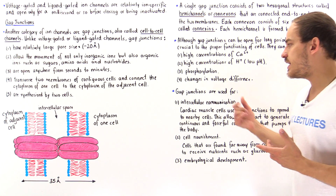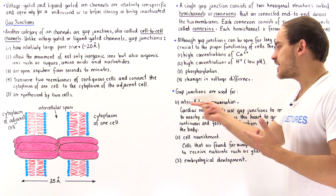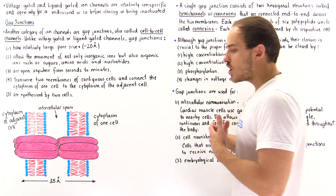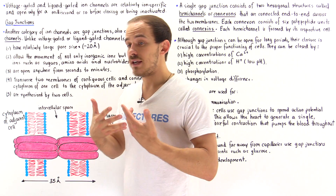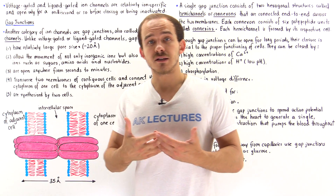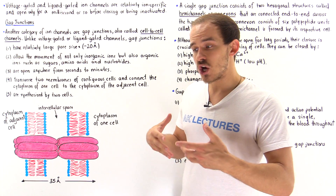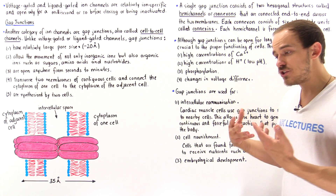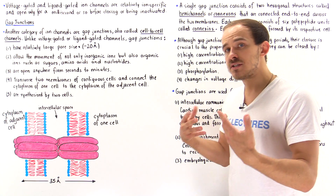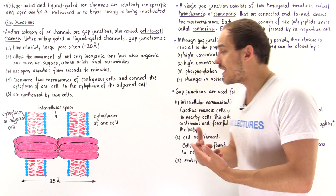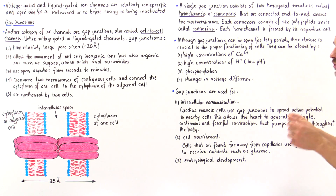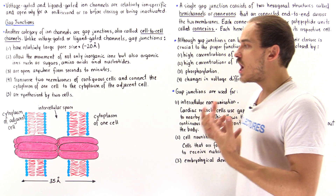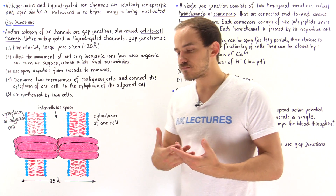Another example of intercellular communication via gap junctions is in the muscle cells of the uterus. When a woman is about to give birth, the uterus must contract, and it's these gap junctions that allow the coordinated contraction of that uterine muscle.